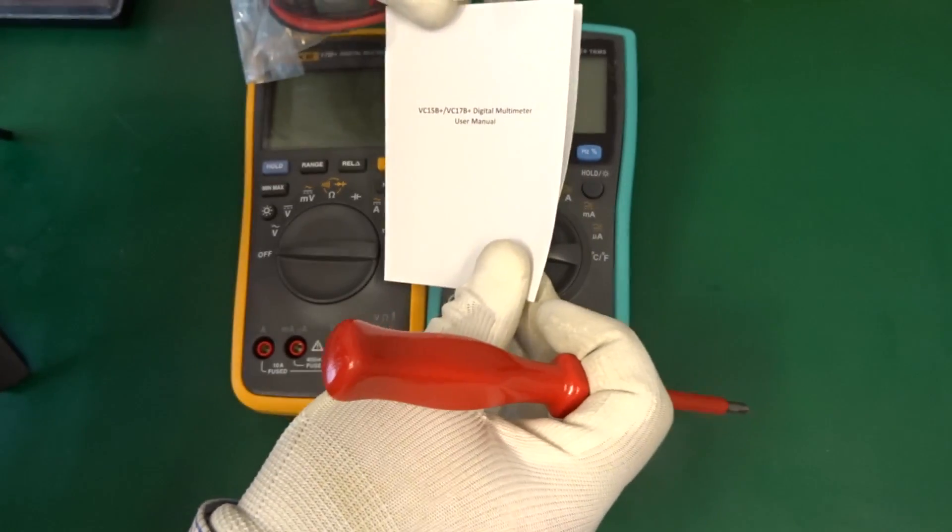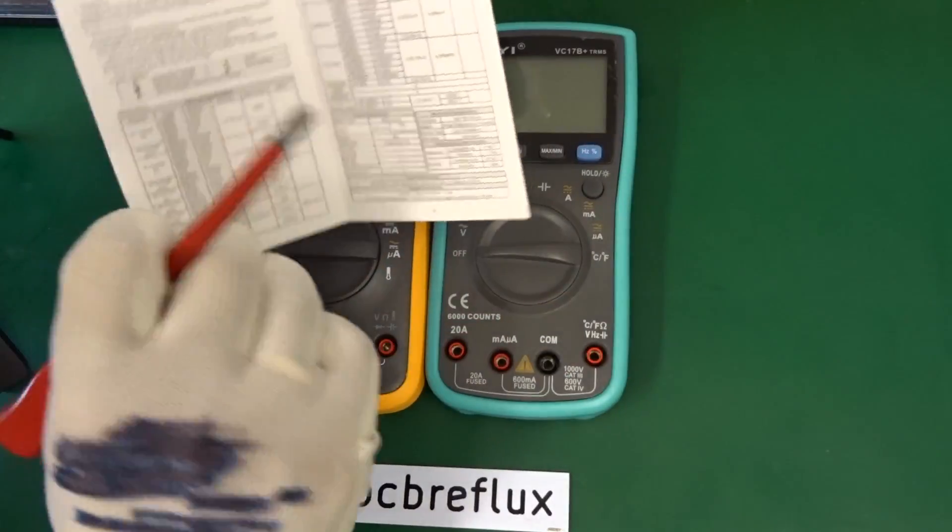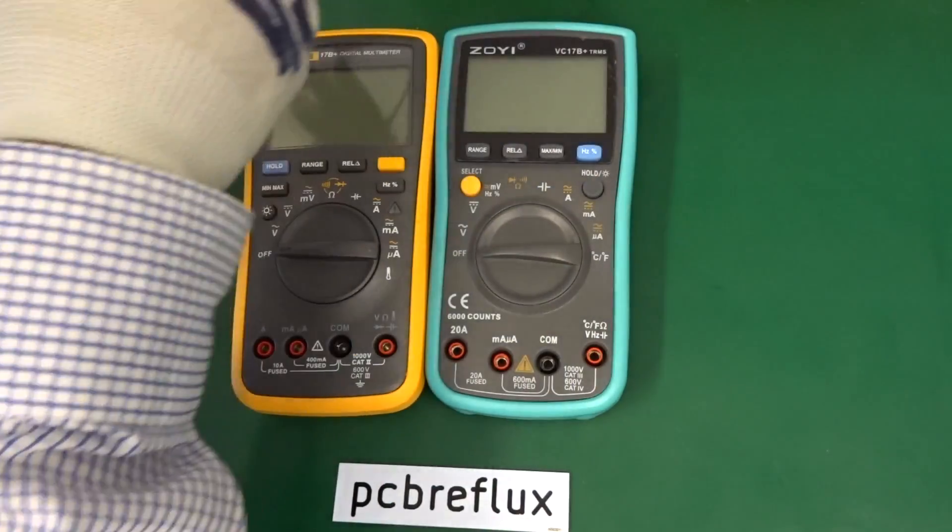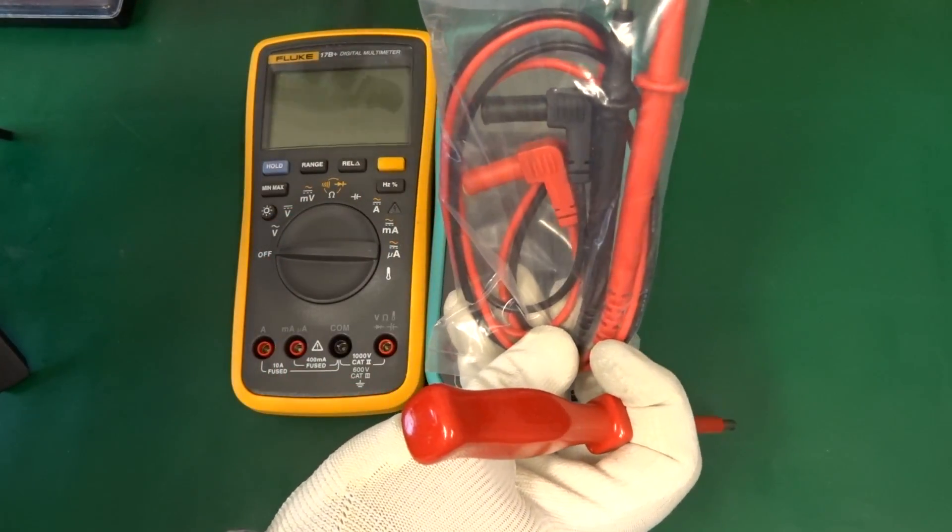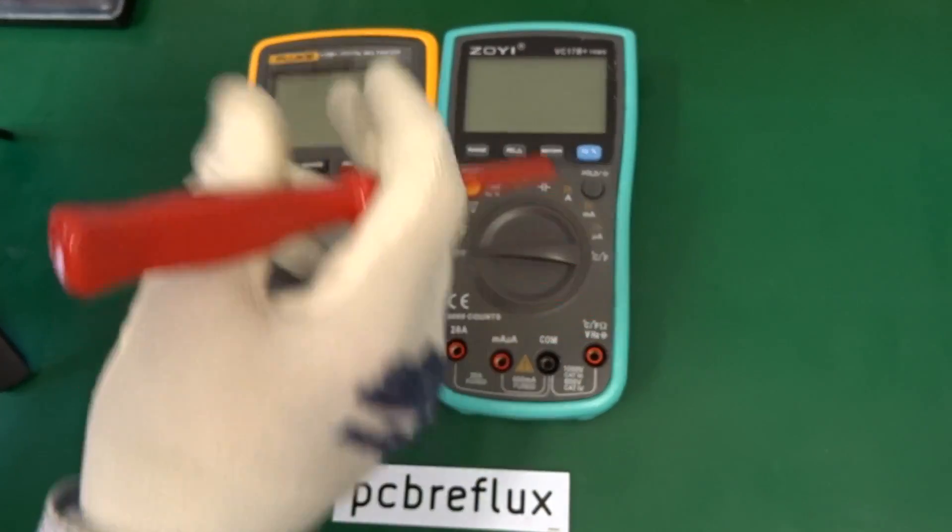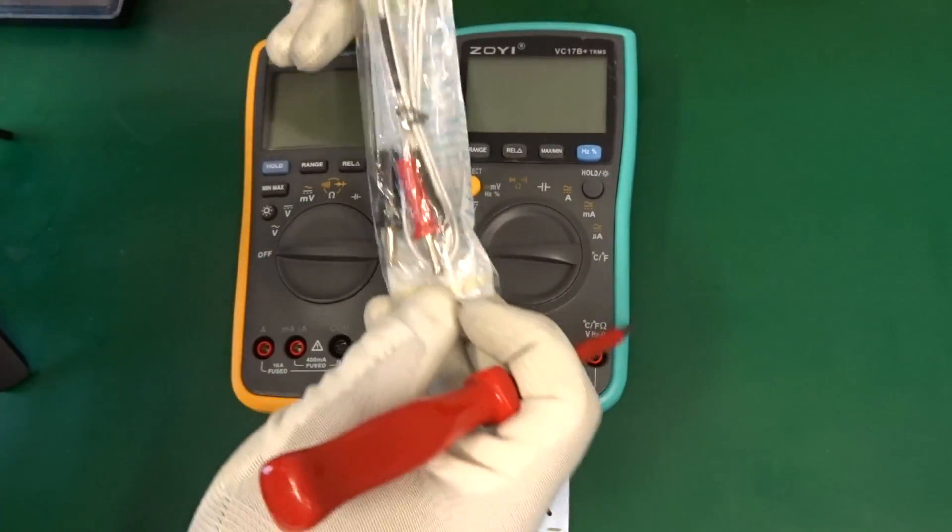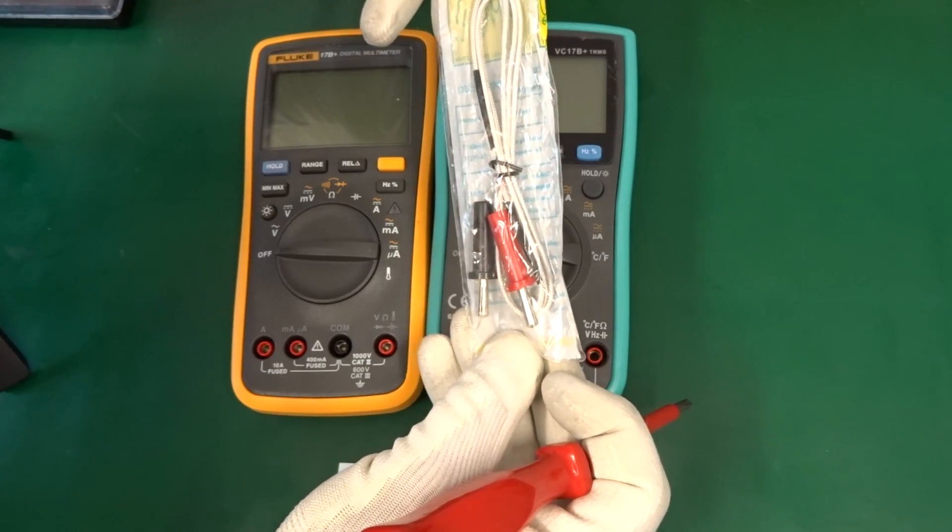And we also get a small data sheet or what have you. And some leads, we can compare the leads. And we also get a K-type thermal couple.